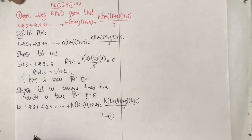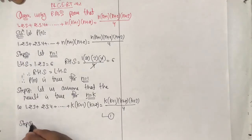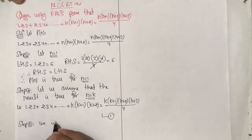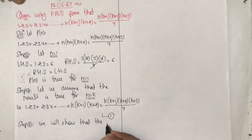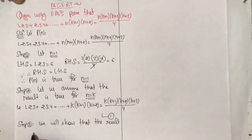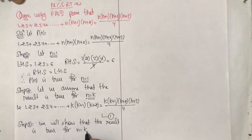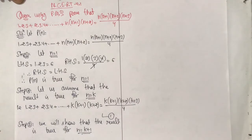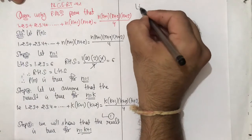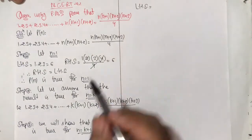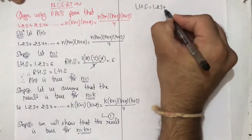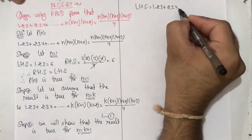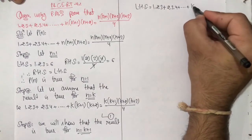Step 3: We will show that the result is true for n = k+1. इसमें left hand side pick करते हैं। Left hand side में n की value को k+1 put करना है: 1·2·3 + 2·3·4 + ... up to the (k+1)th term.